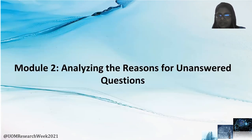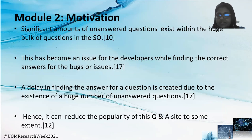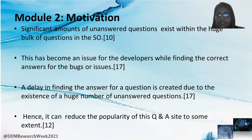Let's move to the second module — analyzing the reasons for unanswered questions. Significant amounts of unanswered questions exist within the huge bulk of questions in Stack Overflow. This has become an issue for developers while finding correct answers for bugs or issues. A delay in finding answers is created due to the existence of a huge number of unanswered questions, which can reduce the popularity of the Q&A site to some extent.